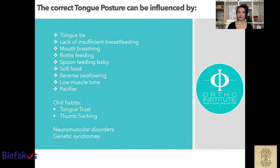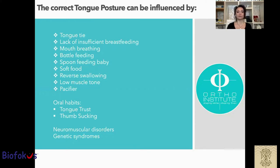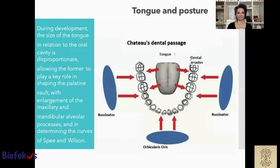Correct tongue posture can be influenced by tongue tie, lack or insufficient breastfeeding, mouth breathing, bottle feeding, spoon feeding, soft food and reverse swallowing, low muscle tone and pacifier, oral habits like tongue thrust or tongue sucking, and neuromuscular disease and genetic syndromes.